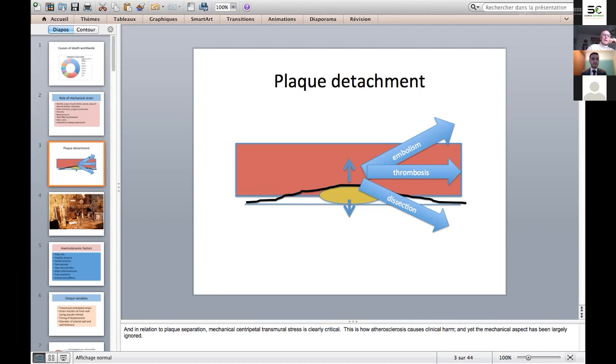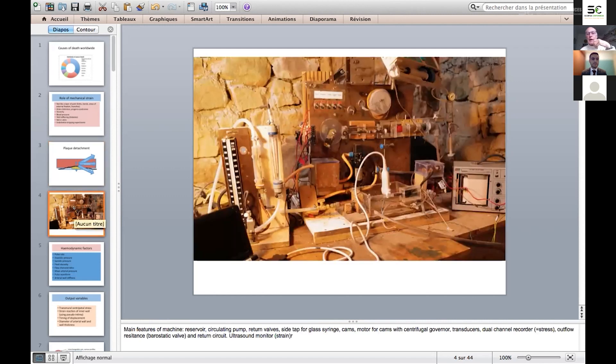Apart from stenosis of the artery simply limiting flow, the main ways in which an atherosclerotic plaque can cause harm is by detaching from the wall and giving rise to platelet embolism, transient ischemic attacks, local thrombosis, acute coronary infarction, or wall dissection. Clearly, mechanical forces are involved in this process.